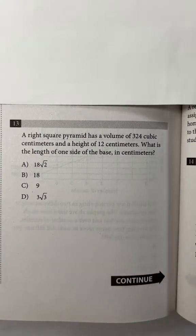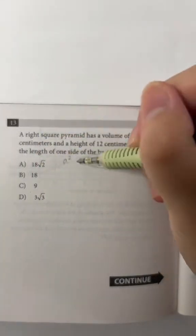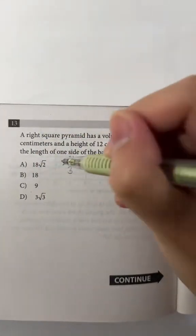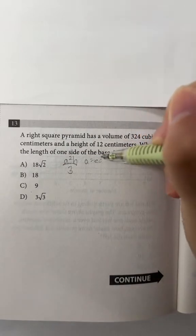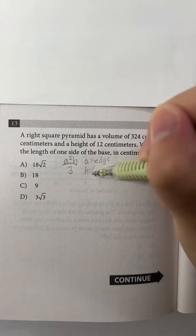Okay, so in order to solve this question, we should know the formula to find the volume of a right square pyramid, and that's basically going to be a squared times h over 3. So here a is equal to the edge of the base, while h is the height.